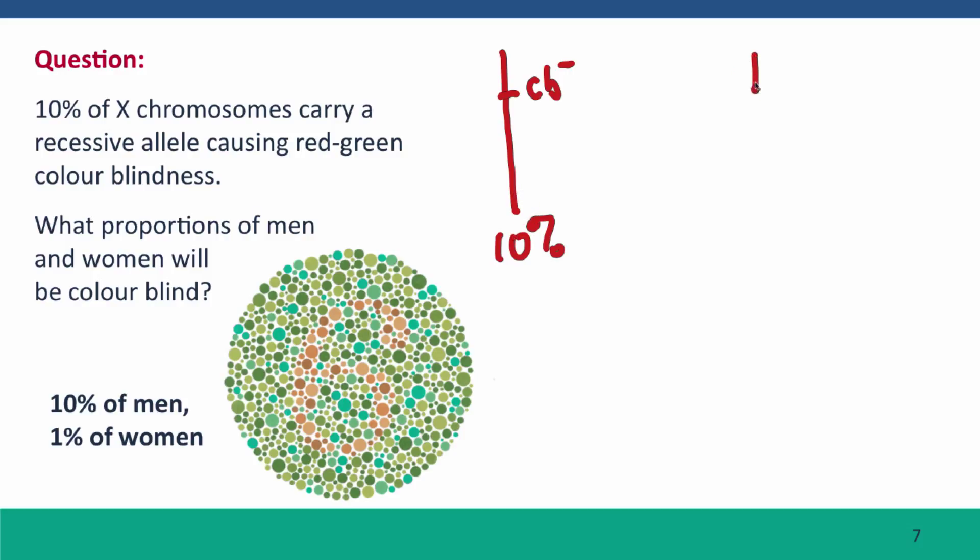Females also have a 10% chance of getting a chromosome with a defective allele, but whether they display the phenotype depends on the second chromosome that they also got, which also has a 10% chance of carrying the defective allele.